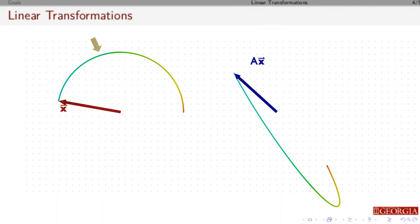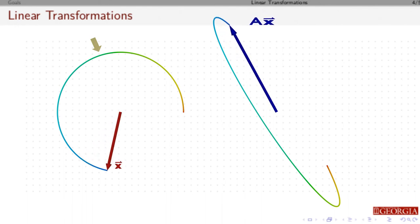As we go around, a times x either stretches or gets compressed, and as we move counterclockwise around the unit circle, a times x moves clockwise.